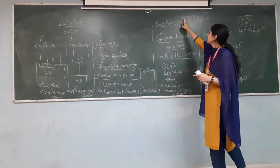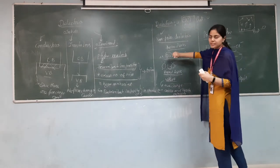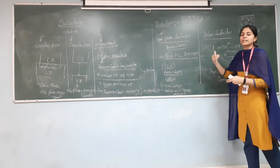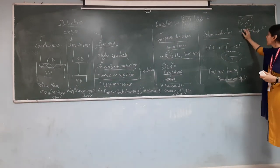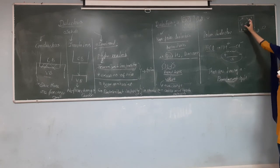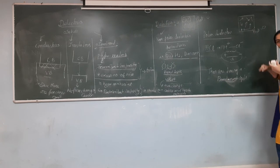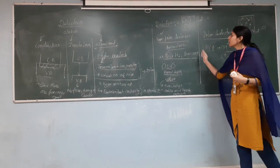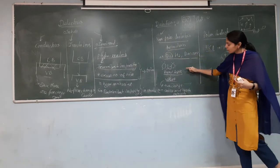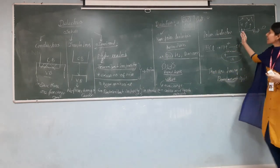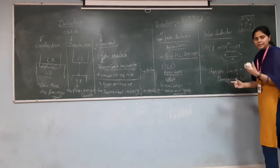When an electric field is applied to non-polar dielectrics, positive and negative charges displace a little and try to align in the direction of the field. In polar dielectrics, the permanently existing but randomly arranged dipoles all align themselves in the direction of the applied electric field. So non-polar dielectrics have no permanent dipole moment, while polar dielectrics have a permanent dipole moment.